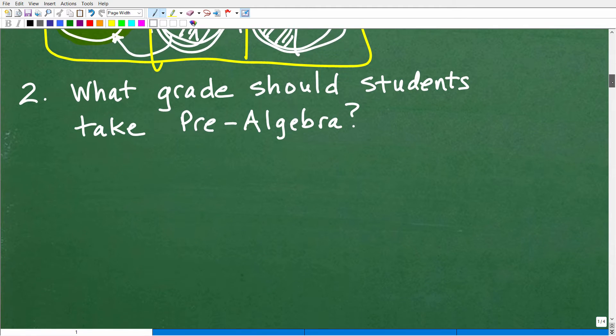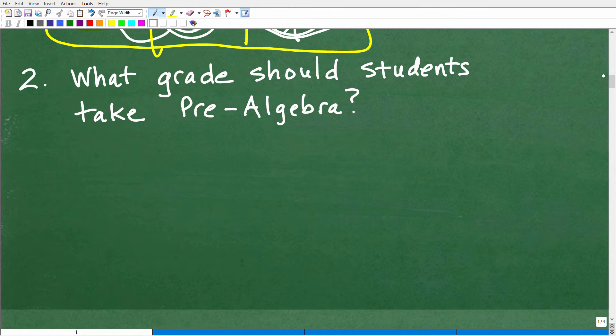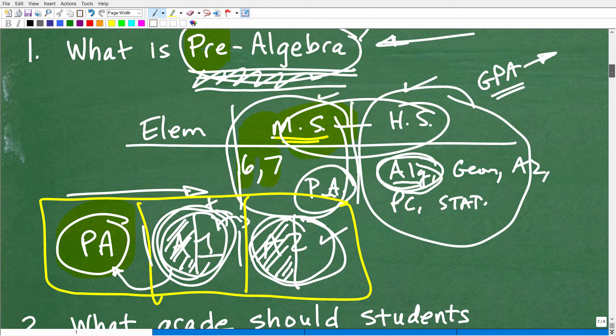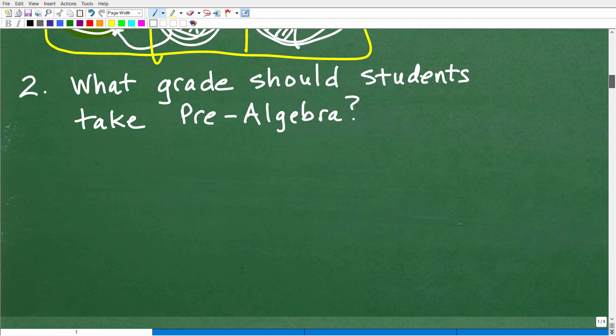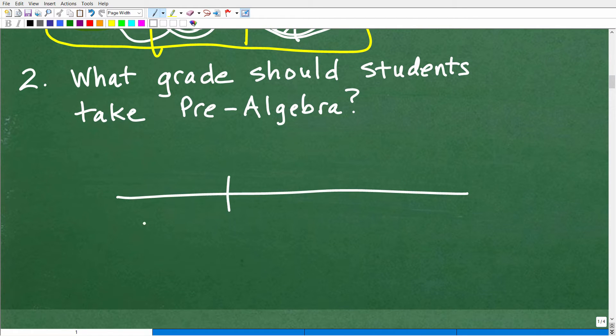All right, so the second thing is what grade should students take pre-algebra? All right, well, let's kind of go back to my little chart here. And typically, for the most part, you don't want to be taking pre-algebra in high school. You want to finish up middle school mathematics as pre-algebra. So let me kind of just draw this again a little bit clearer. So here we have elementary level. So we're talking up to the fifth grade. And then in the middle school, you have sixth grade, seventh grade, and then eighth grade. So the best place to take pre-algebra typically for most students is going to be at the eighth grade level.